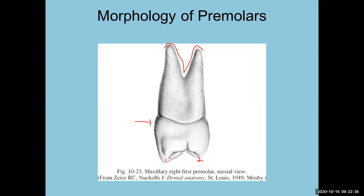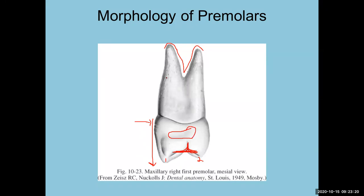The facial cusp is longer than the lingual cusp. This is the transition tooth from a canine, so the facial is going to look very much like a canine. Another identifying factor: there is a groove that goes over the mesial marginal ridge, and it's rare for a groove to go over a ridge. You've got a mesial marginal ridge, a depression, and it oftentimes will go all the way up the entire root.